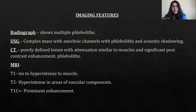On MRI, the lesion is T1 iso to hyperintense relative to muscle. On T2, it is hyperintense in areas with vascular components, and post-contrast images show prominent enhancement of the hemangioma.